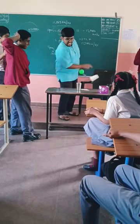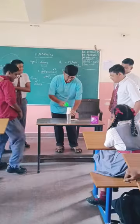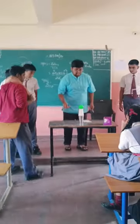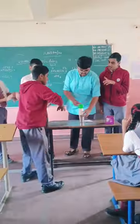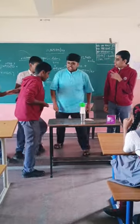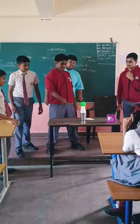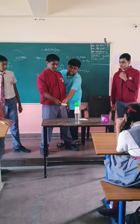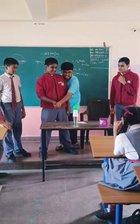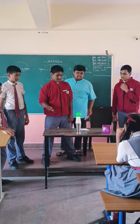Students tried different methods. Finally, we all understood that when we hit the paper glass at higher speed with the scale, no force is transferred to the ball and the ball will exactly fall on the glass. By this we understood that every object wants to be at rest unless and until it is compelled by an external force.